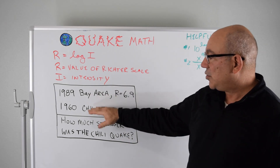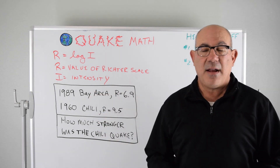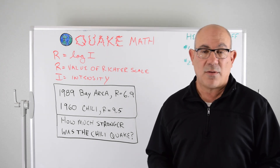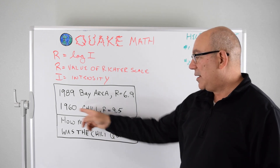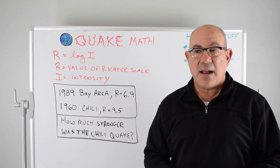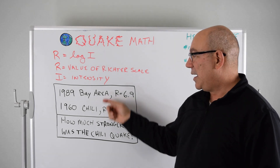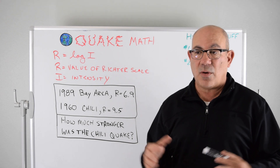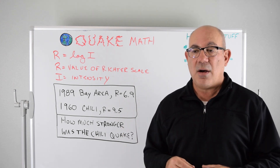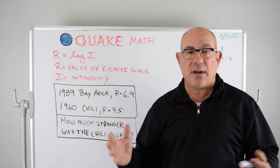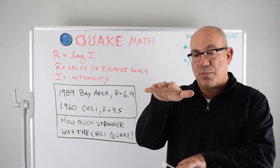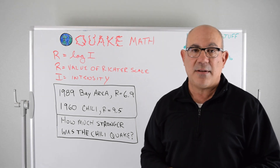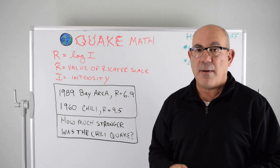We have two earthquakes that we're looking at. One happened in the Bay Area in 1989, and the other was the strongest earthquake the world has ever recorded, which happened in 1960 in Chile. We all remember the Bay Area earthquake because it happened right during the World Series — the whole stadium was shaking, people were freaked out, the players stopped, the game stopped. The Bay Area bridge collapsed and created a pancake, and lots of people got hurt and killed. It was a big deal.